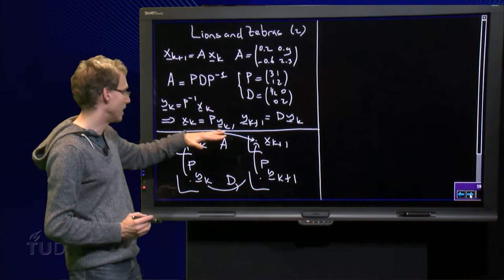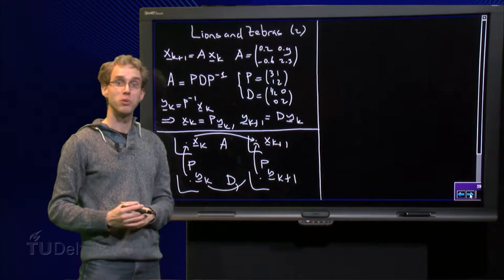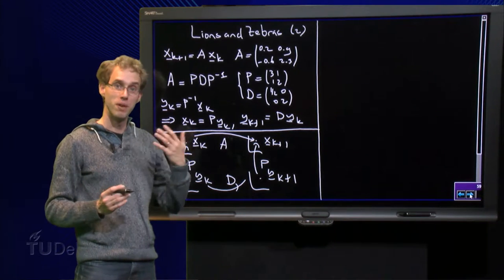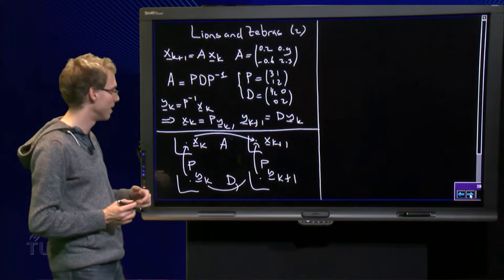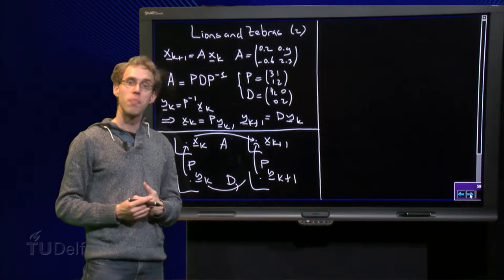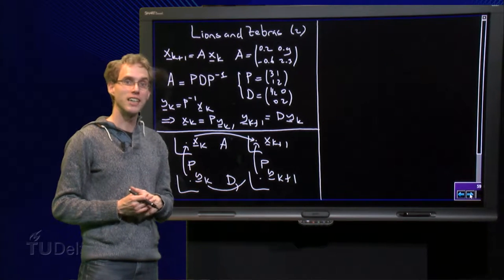That means that, in fact, D is the same transformation as A, only with respect to another basis, with respect to the basis consisting of eigenvectors of the matrix A. So, in this new basis, the transformation looks much nicer.